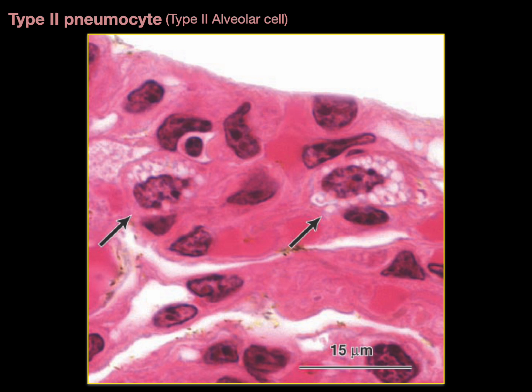In this light micrograph, the black arrows show a couple of type 2 pneumocytes. Those white circles in the cytoplasm are lamellar bodies containing surfactant.